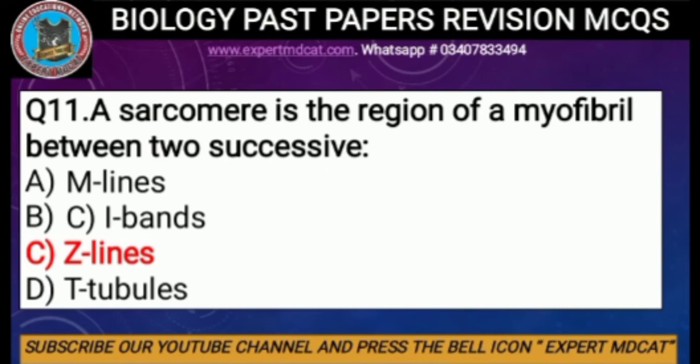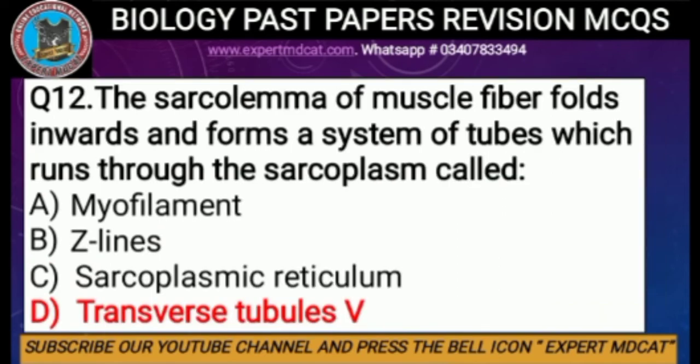Question number eleven: a sarcomere is the region of a myofibril between two successive — options are M lines, I bands, Z lines, or tubules. The correct option is C, Z lines. Sarcomere is the region of a myofibril which is present between two successive Z lines.